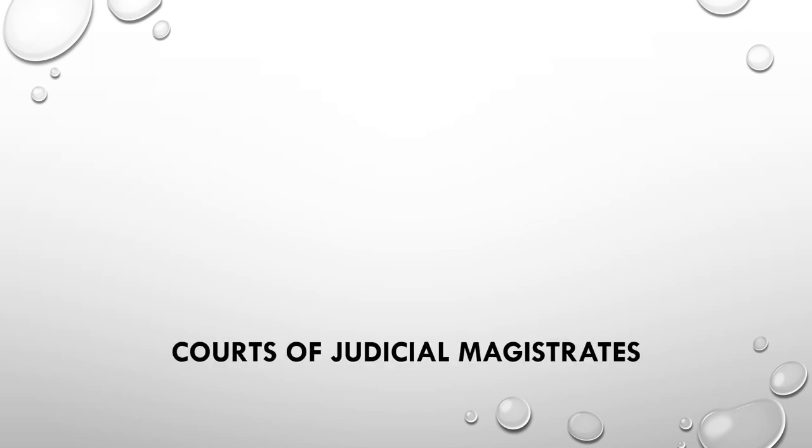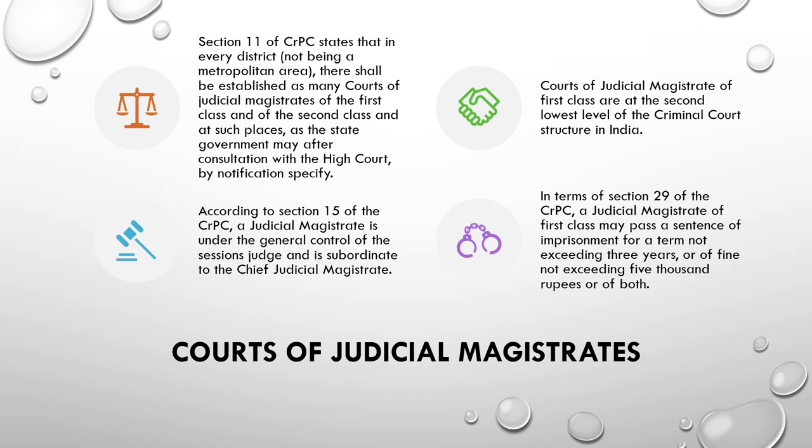Next is the court of judicial magistrates. According to Section 11 of CrPC, in every district not being a metropolitan area, there shall be established as many courts of Judicial Magistrate of the First Class and Second Class as the state government may, after consultation with the High Court, specify. According to Section 15 of CrPC, a judicial magistrate is under the general control of the session judge and is subordinate to the Chief Judicial Magistrate. Courts of Judicial Magistrates of First Class are at the second lowest level of the criminal court structure in India. As per Section 29 of CrPC, a Judicial Magistrate of First Class may pass a sentence of imprisonment for a term not exceeding three years, or a fine not exceeding 5,000 rupees, or both.